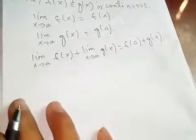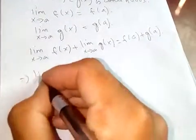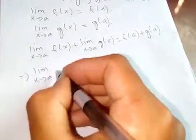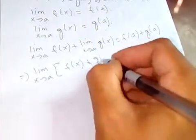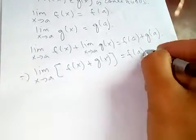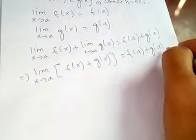Now from properties of limit, limit x tends to a of f of x plus g of x, which is f of a plus g of a.